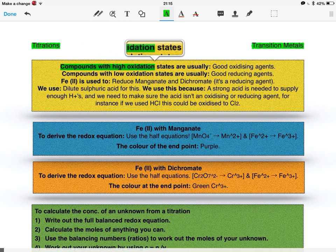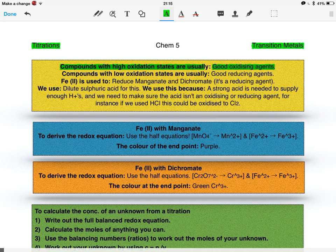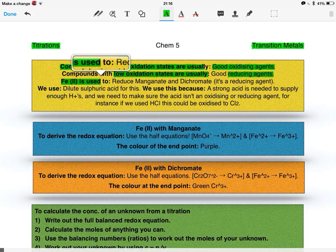Compounds with high oxidation states are usually good oxidising agents. You can figure out from this, then, that compounds with low oxidation states are usually good reducing agents. Iron 2 plus, then, is a good reducing agent, because it's only got a 2 plus charge, which is pretty low.